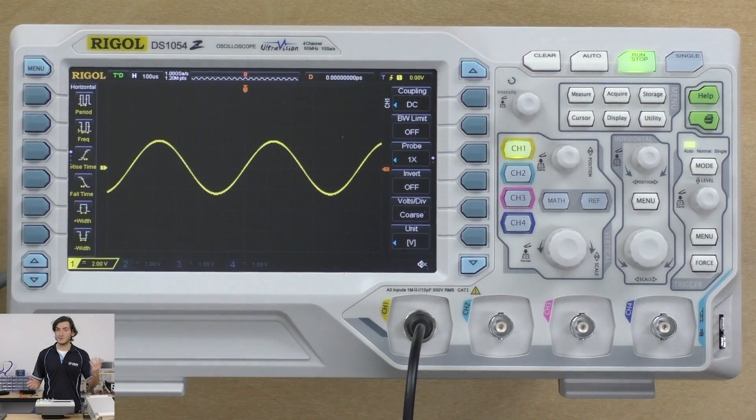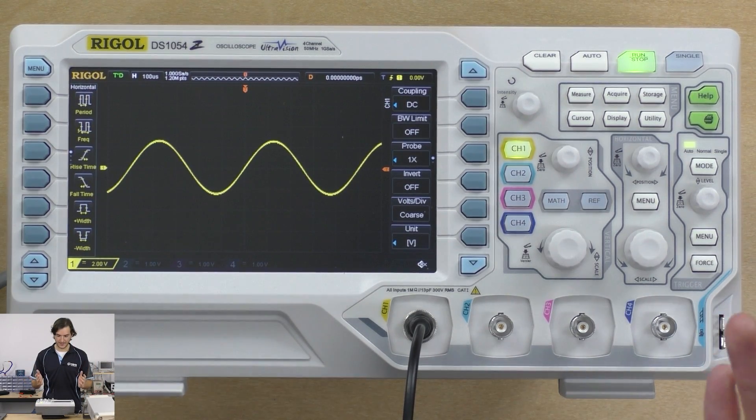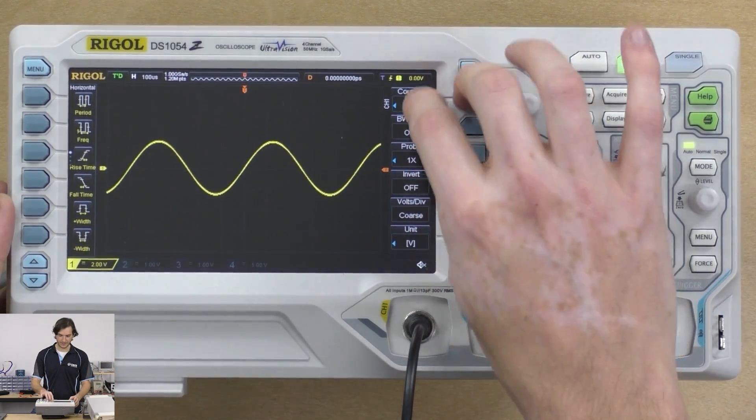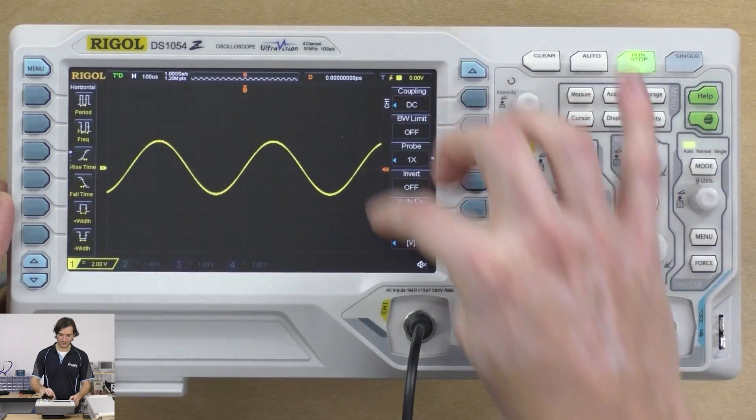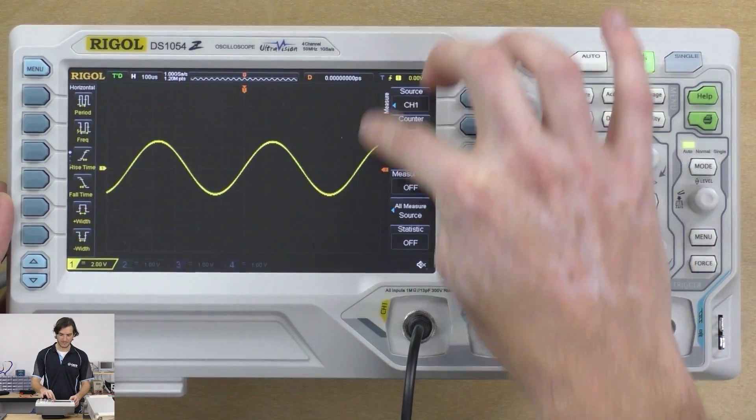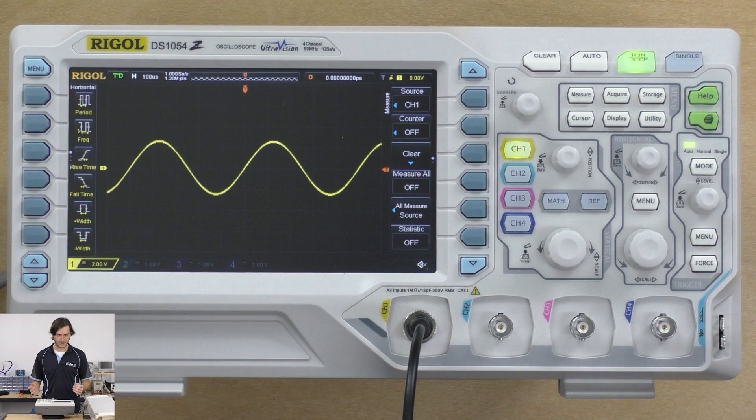We have our wave on the screen and we want to take some measurements. You can see we have our channel menu currently on the right-hand side. This is like the context menu, so if I go to measure it changes to the measure menu. That's a pretty standard operation.